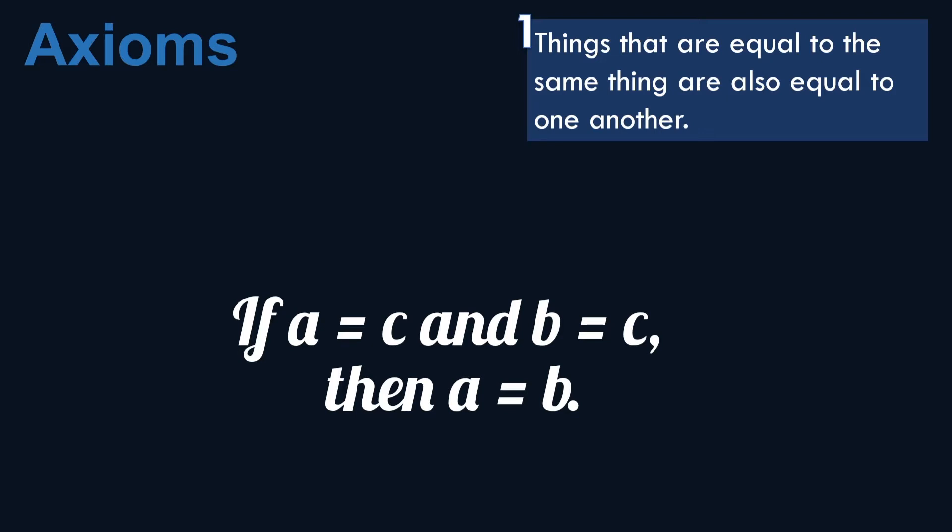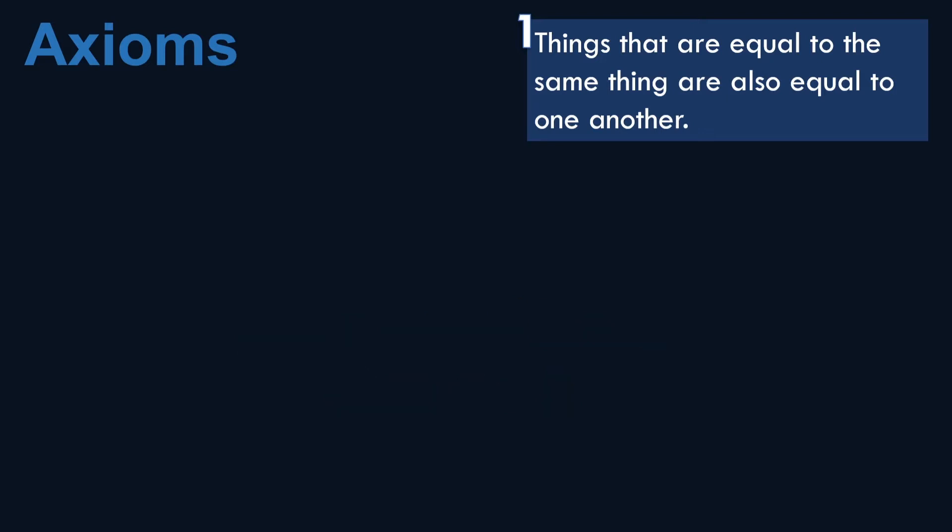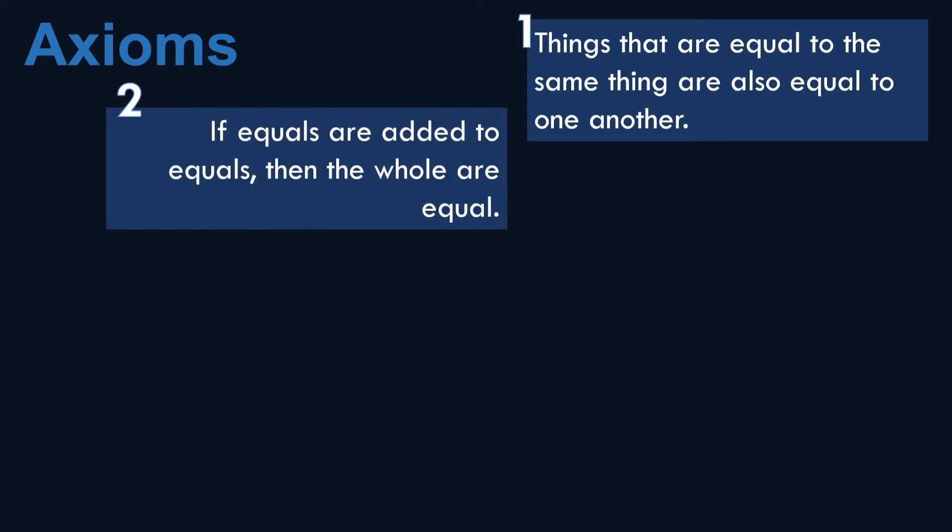As you can see here, A and B are just equal to the same thing. The second axiom states if equals are added to equals, then the whole are equal.